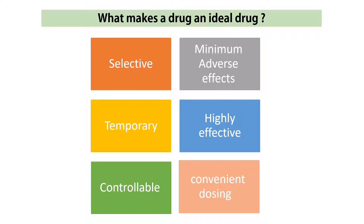The second characteristic is that it has to have a minimum adverse effect — it should not have a lot of adverse effects. The third characteristic is that it should be temporary; it should not change the function of the organ forever. The fourth one is highly effective — when a patient gets a drug, it should be highly effective at a low dose, so the patient doesn't have to take it many times a day.